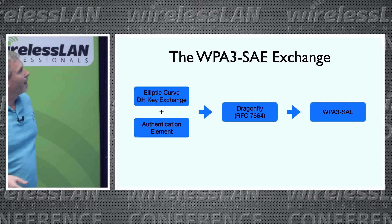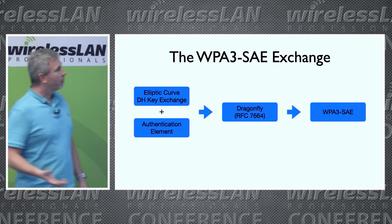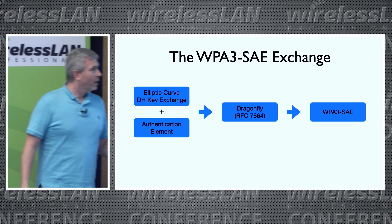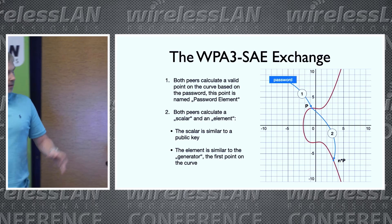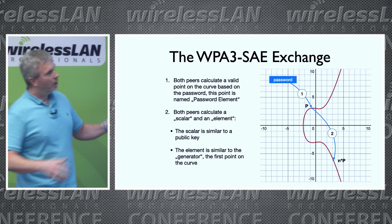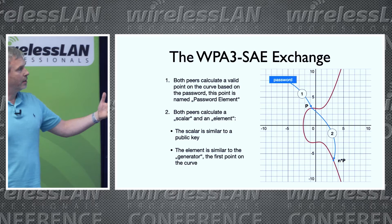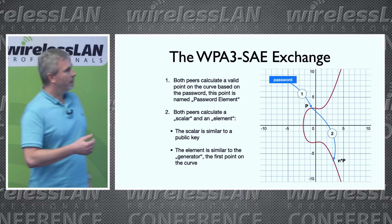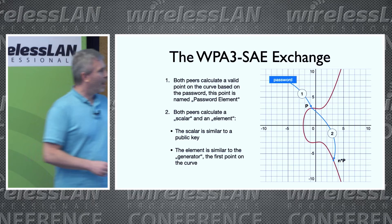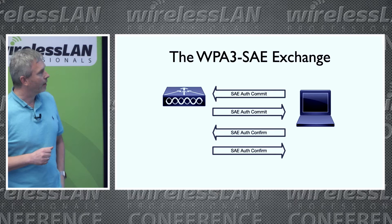So WPA3 again. If we take this elliptic curve Diffie-Hellman key exchange and add an authentication element — because elliptic Diffie-Hellman by itself is not authenticated — we get to an algorithm like Dragonfly. A modified version of Dragonfly is used in our WPA3 SAE handshake. In SAE, we use a password and the SSID, map it to a curve, and generate two values: a scalar, which is similar to the public key, and a field element, which is similar to the first point on the curve. These two values get exchanged in the first two packets of our SAE handshake.